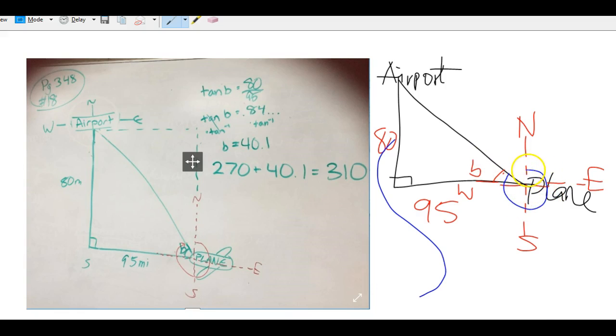This is the bearing, so the angle has to go all the way from the north till that. You have 90 here, then 90 in this quadrant, 90 in this quadrant plus this angle b. We use tan b, opposite 80 over 95. After we solve, we use the inverse tan to find b. We find the inverse of 80 over 95 and then we get this, and we have to add the 270 to get the whole angle.